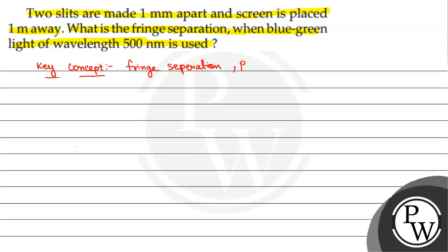Lambda is the wavelength of light. Capital D is the distance between the screen and the slits, and small d is the distance between the slits, the separation of slits.